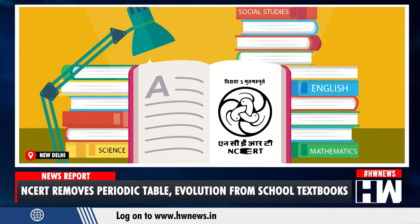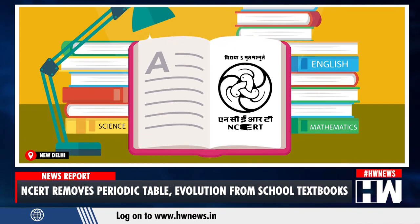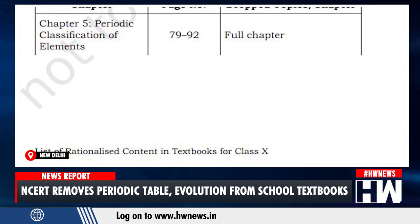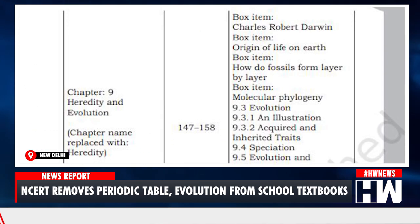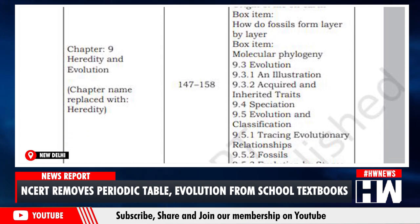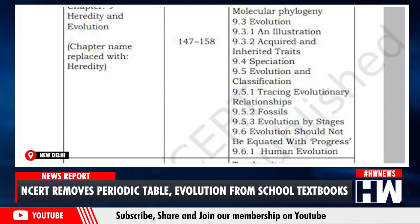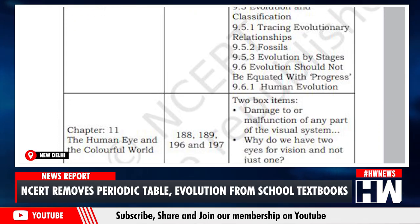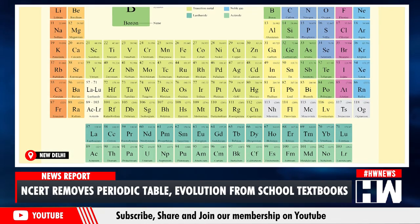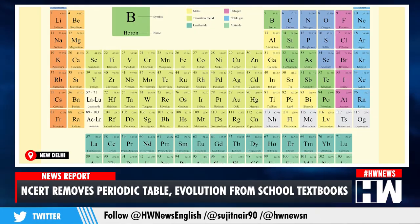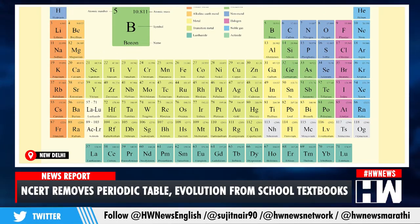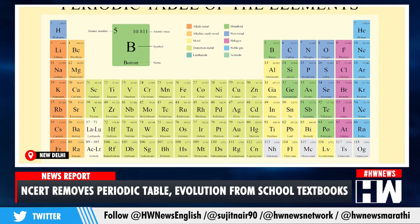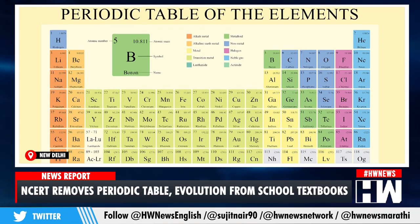While the chapters have been removed from the Class 10 textbooks, students can still learn about these subjects if they choose to study them in Class 11 and 12. The Periodic Table, for instance, will only be taught to students who opt for Chemistry in their final two years of education. However, this means that many students may not have exposure to these important topics unless they pursue further studies in the relevant subjects.